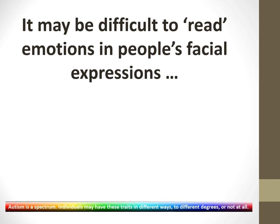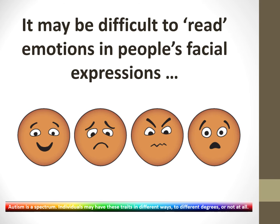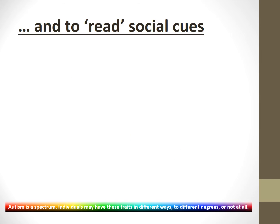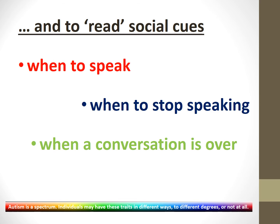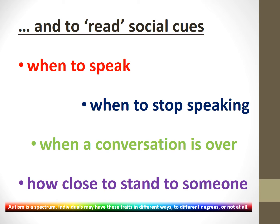For autistic people it may be difficult to read emotions in people's facial expressions. Apparently there are only four basic emotions — happy, sad, angry and afraid — and neurotypical people tend to rely on facial expression as well as words to communicate how they're feeling. Autistic people may have to learn how to work out how others feel from their facial expressions. Similarly, it can be difficult to read social cues such as when to speak, when to stop speaking, when a conversation is over, or how close to stand to someone.